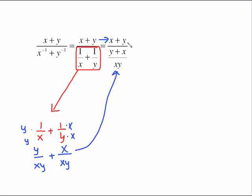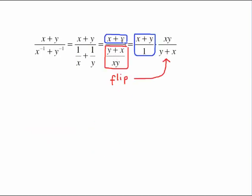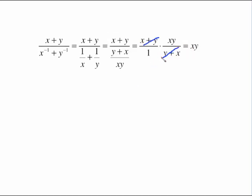The numerator did not change. Now because this is a fraction on the bottom, I like to think of x plus y as x plus y over 1. Taking that bottom fraction and flipping it upside down: the xy goes to the top, and the y plus x goes to the bottom. Now it is a multiplication problem, and we have identical binomials — x plus y and y plus x cancel out — leaving just xy over 1, which is just xy.